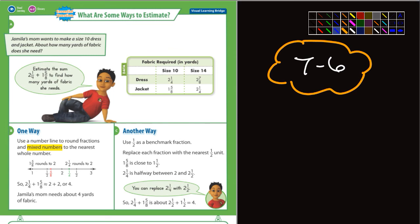Another way is to use half as a benchmark fraction. In other words, replace each fraction with the nearest half unit. So 1 5/8 is very close to 1 1/2. And 2 1/4 is halfway between 2 and 2 1/2, so you can replace 2 1/4 with 2 1/2.